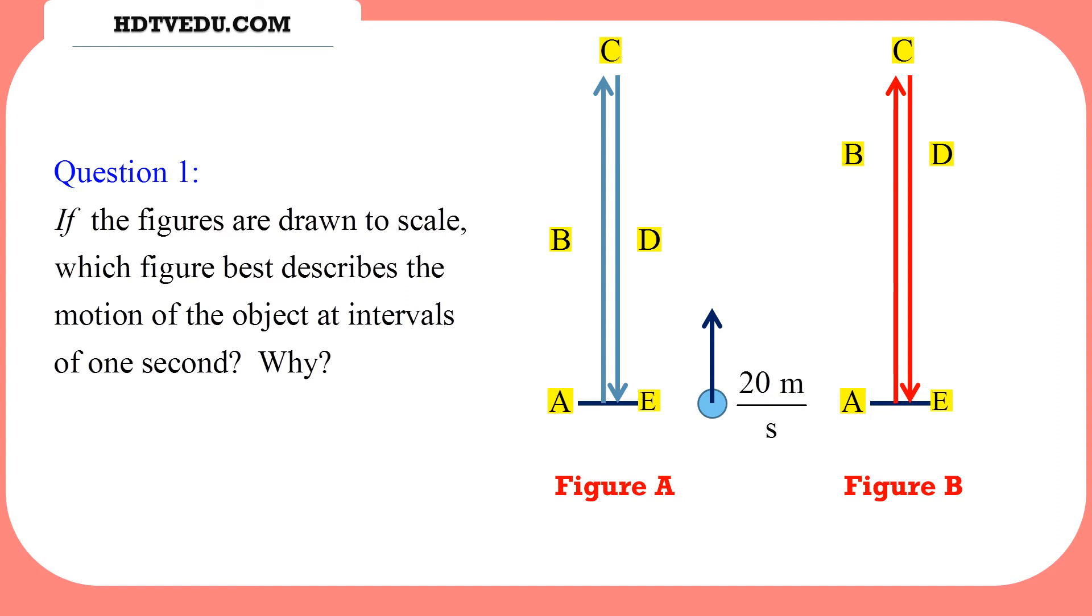For figure B, from A to B you're covering more distance. From B to C, you're covering less distance. From C to D, less, and from D to E, more. A to B distance is much bigger than distance B to C. So what we see in figure B is that we are covering unequal distances in equal intervals of time.